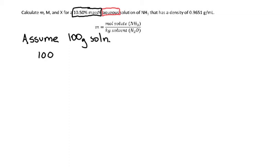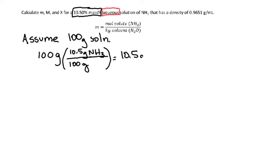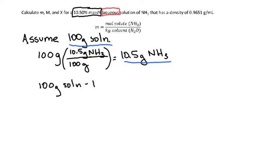With 100 grams of the solution, we can use that 10.5% as a conversion factor to easily determine how much of each component we have. For every 100 grams of solution, 10.5 grams is the solute — the ammonia. That means 10.5 grams of ammonia is in our solution, and the rest is water: 100 minus 10.5 gives us 89.5 grams of water.